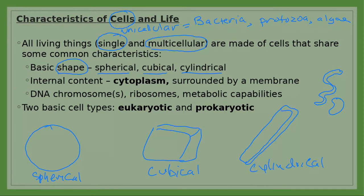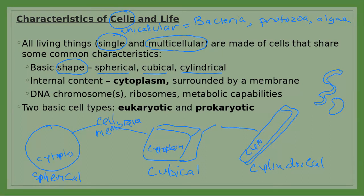All cells share some similarities. The first is that all cells have a boundary called the cell membrane. The second is that all cells have cell contents called the cytoplasm, which mostly consists of water. And all cells also carry chromosomes, because of their ability to reproduce and transfer genes.